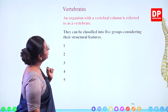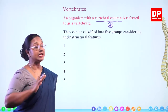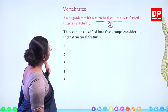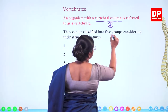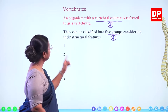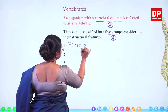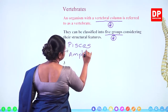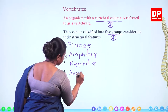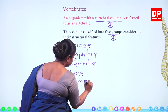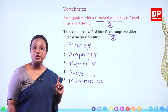An organism with a vertebral column is referred to as a vertebrate. If it doesn't have one, it is an invertebrate; when it has one, it is a vertebrate. They can be classified into five groups considering their structural features: Pisces, Amphibia, Reptilia, Aves, and Mammalia. We will discuss these one by one. With that introduction, I will move on to the next slide.